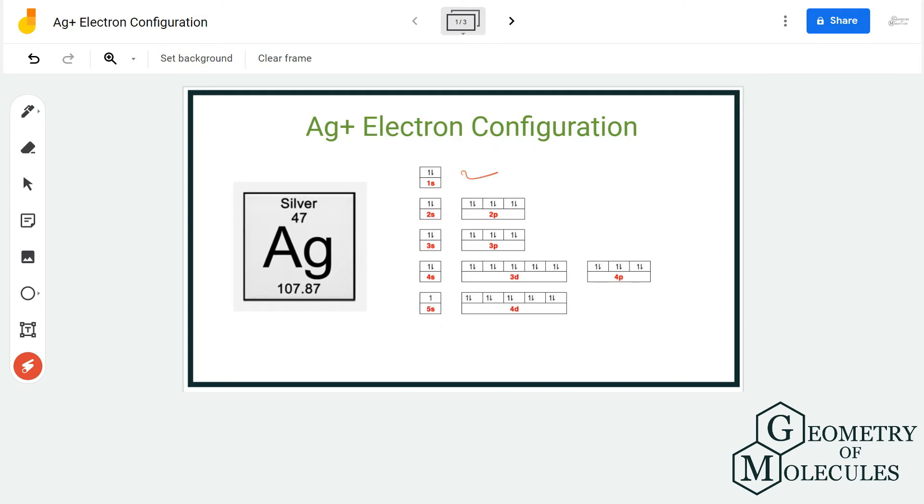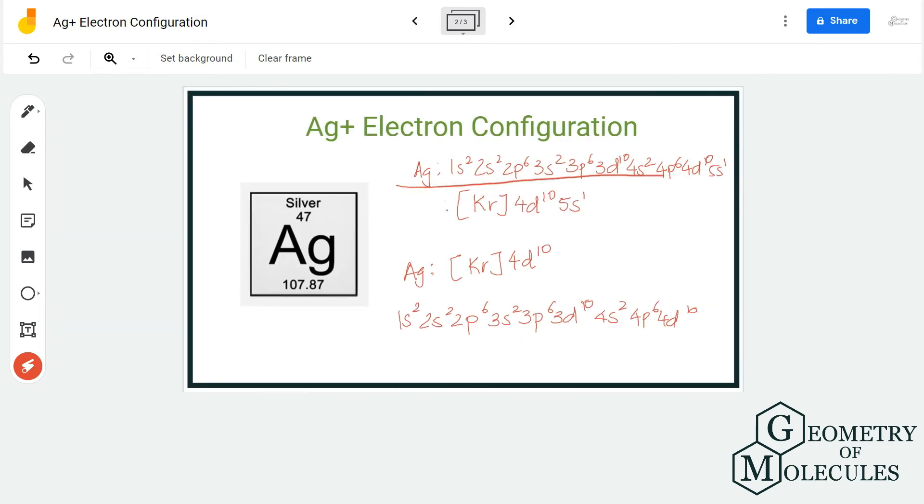I know this is a mouthful to say, and hence it is also written like this: Kr 4d10 5s1. This is the electron configuration for silver.